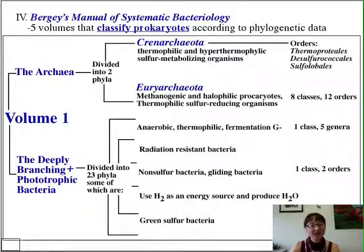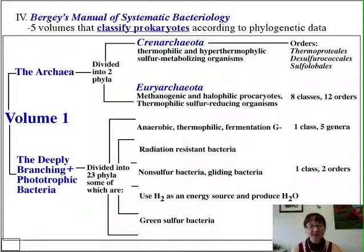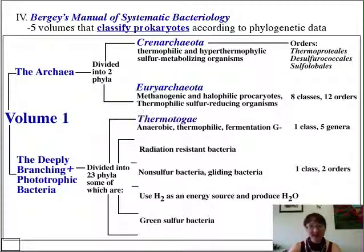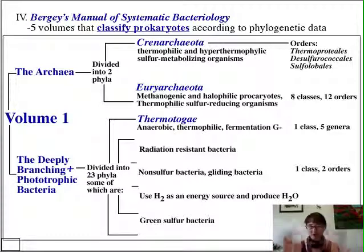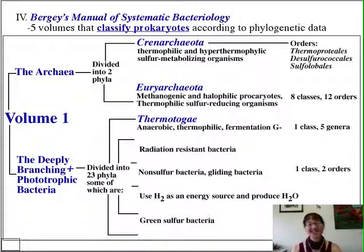The rest of volume one is devoted to deeply branching and phototrophic bacteria — a huge number of phyla. For example, the Thermotogae are so cool because the prefix 'toga,' meaning outer cloak, applies here too. These bacteria are surrounded by a very loose-fitting outer sheath that typifies them. They are thermophilic, anaerobic, and fermentative.